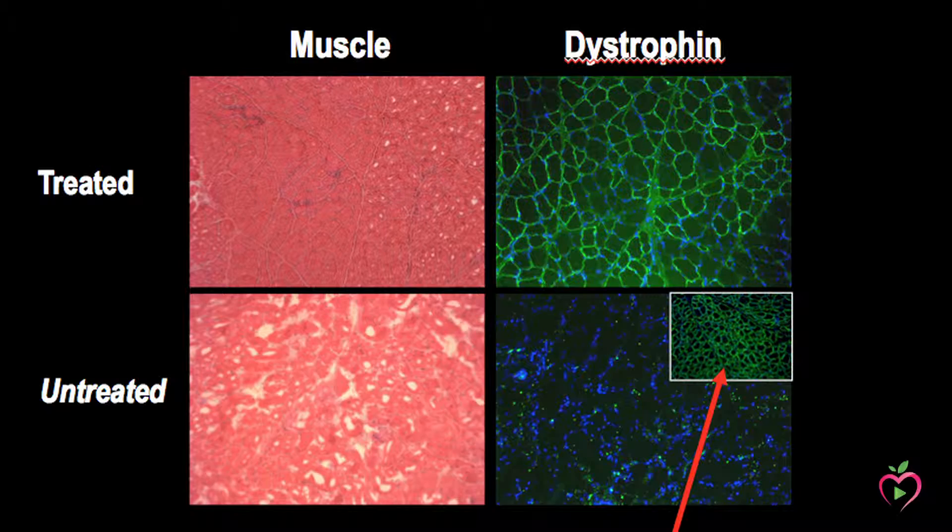We then break the cells open and can purify it using conventional methods with different columns and biochemical purification methods, to end up with a pure solution of the viral delivery shuttle.